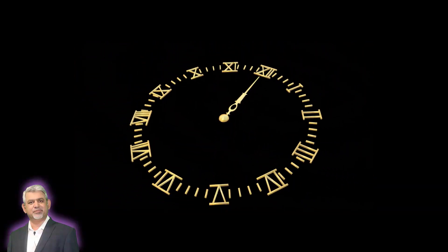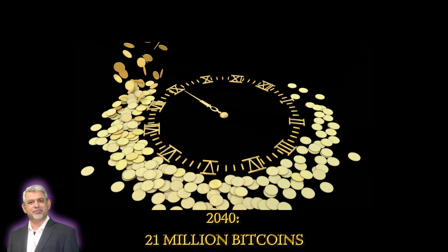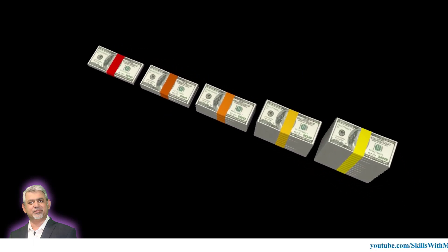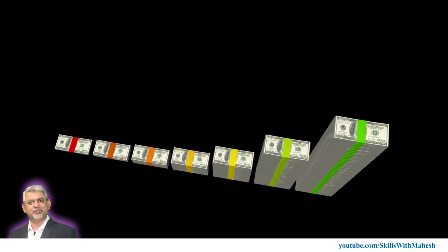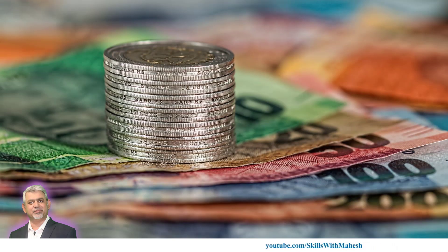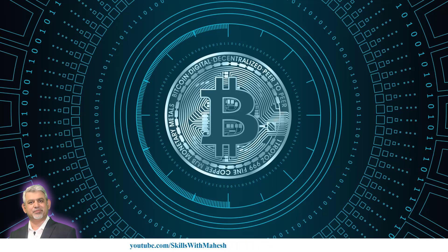Bitcoin has a fixed money supply, which people like. By the year 2040, it will be maxed out to approximately 21 million Bitcoins. This idea appeals to many people who think that central banks print money and increase money supply any time there is a governmental need. It leads to an oversupply of money and can eventually erode money value. When too much money is chasing too few goods, the value of money will definitely erode. But that will not happen in the case of Bitcoin — this is what the proponents of Bitcoin say.